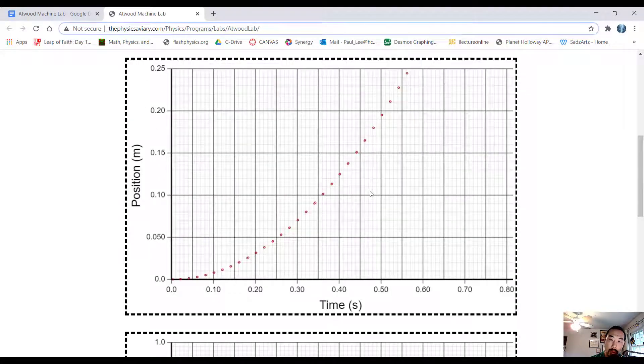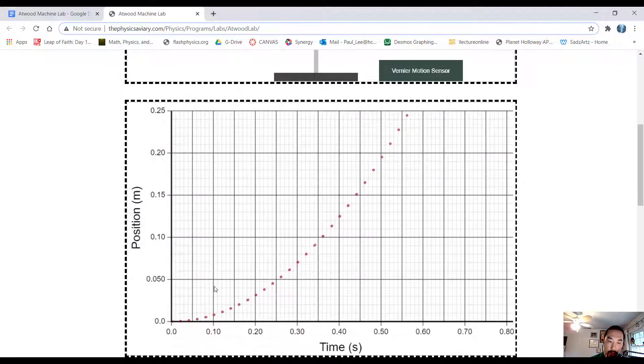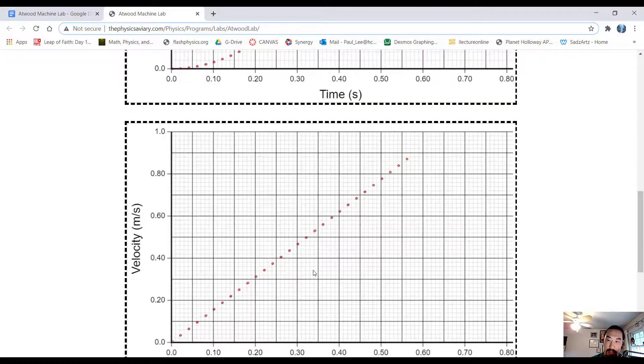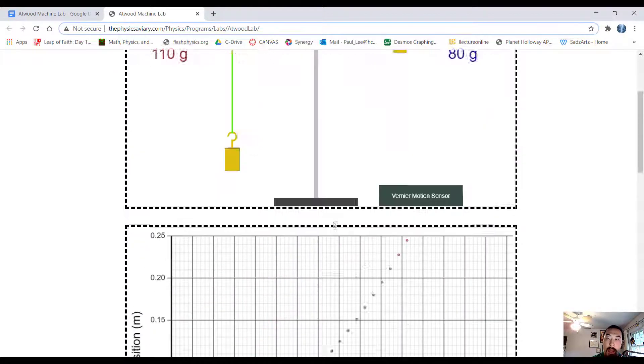Okay, so you're going to go to Google. And you're going to create your position time graph and your velocity time graph. And you're going to analyze it.